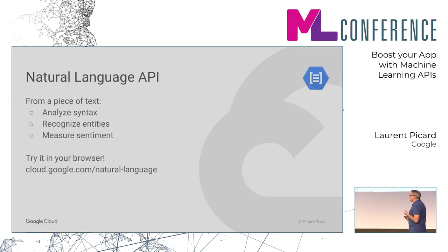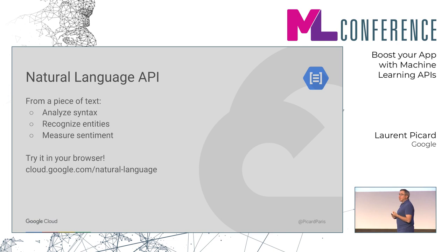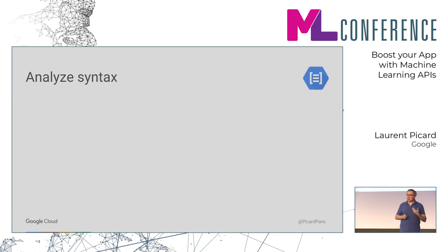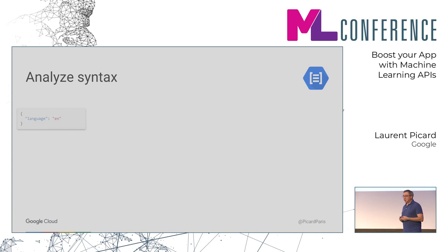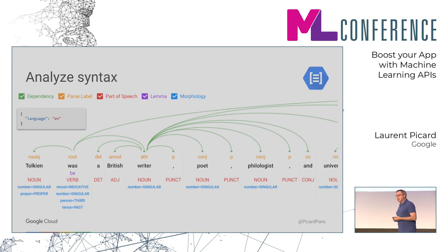Let's get started with the first API. The data we have is text — it's called the Natural Language API. We provide text and get as much information as possible from it. We can analyze the syntax, recognize entities, and recognize sentiments in the text. For example, I took the sentence 'Tolkien was a British writer' and so on. If I give this sentence to the API, the result tells me first that it is an English sentence, and second I get the full syntax — the type, gender, and everything related to each word.